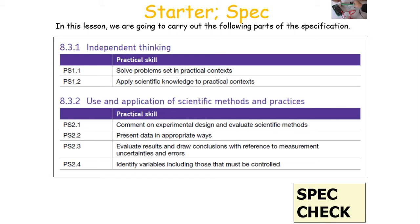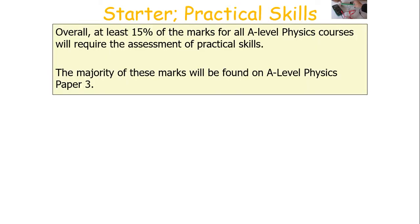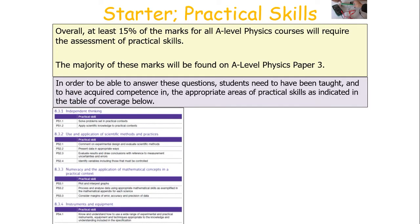We're going to be looking at solving problems set in practical contexts, applying scientific knowledge to practical contexts, and then commenting on experimental design and evaluating scientific methods. Overall, at least 15% of your marks for all A-level physics courses will require the assessment of practical skills. For AQA, the majority of these marks will be found on A-level physics paper 3.